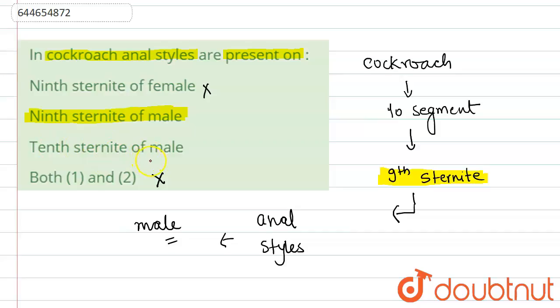If you talk about the tenth sternite of the male, it has a long, pulp-like jointed anal cerci. This anal cerci is present in both cases - in male and female - in the tenth sternite. But the question asks about anal styles, so anal styles